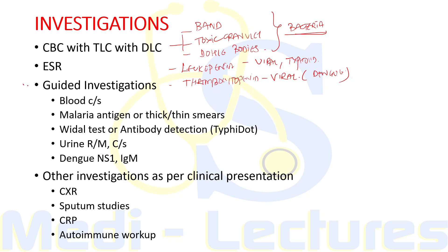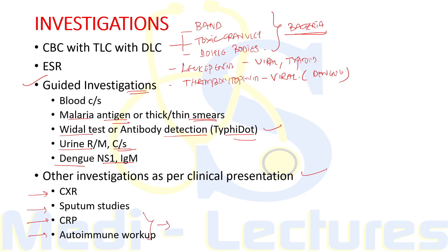We should also do guided investigations like blood culture and sensitivity. If the patient is in a malaria-endemic area, we can send malaria antigen, thick and thin smear, or fluorescent microscopy. We can do the Widal test or antibody detection such as Typhidot, urine routine microscopy and culture, and dengue NS1 or IgM antibody. Other investigations are done as per the clinical presentation — chest X-ray, sputum studies, CRP, and autoimmune workup if an autoimmune condition is suspected.